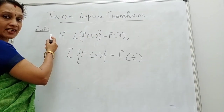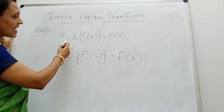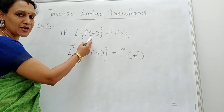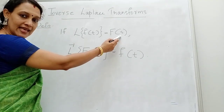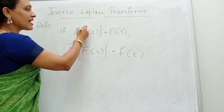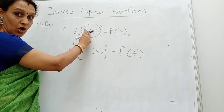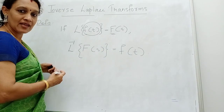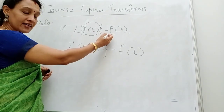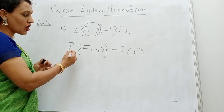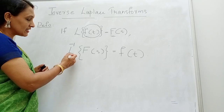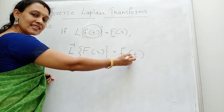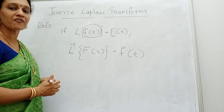Let me first consider the definition. If we have L of f(t), the Laplace transform of a function f(t), this is denoted by capital F(s). Then this small f(t) is called the inverse Laplace transform of capital F(s). We denote the inverse by the symbol L inverse. Symbolically, L inverse of F(s) is equal to f(t).